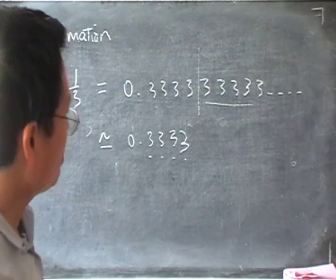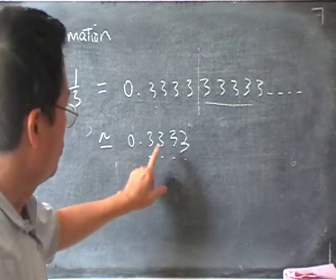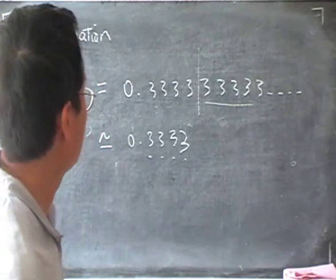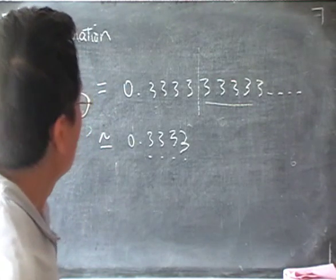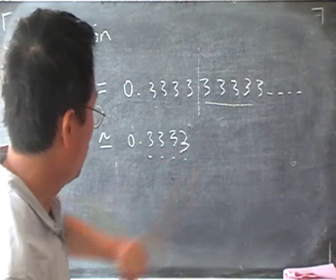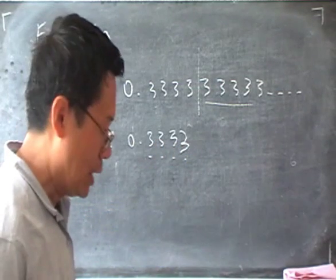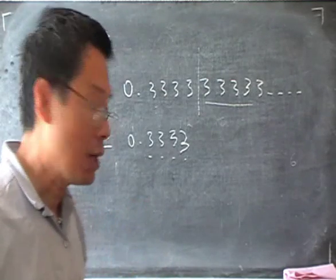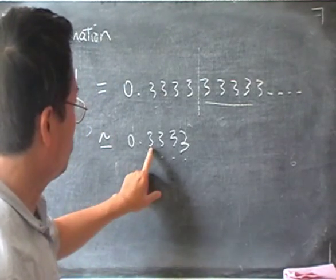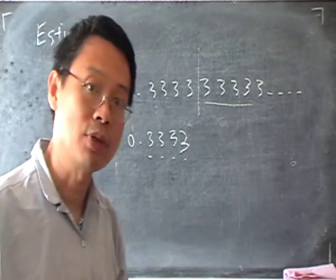Now, another way to think about it is the number of figures — we call it the number of significant figures. If you count 1, 2, 3, 4 — if you count the non-zero numbers here — that also gives you an idea of how accurate it is. In this case, there are 1, 2, 3, 4 significant figures.